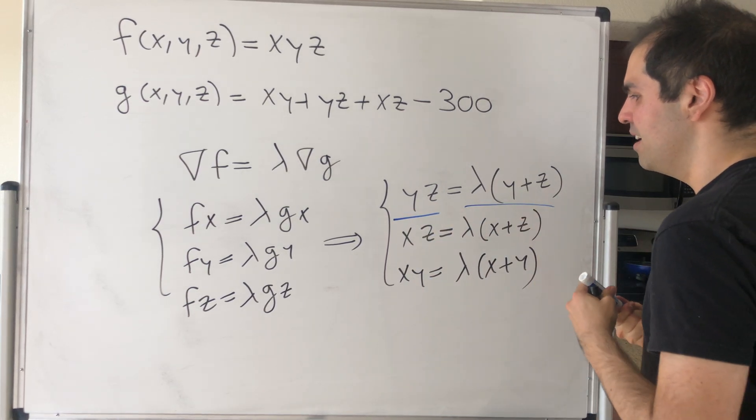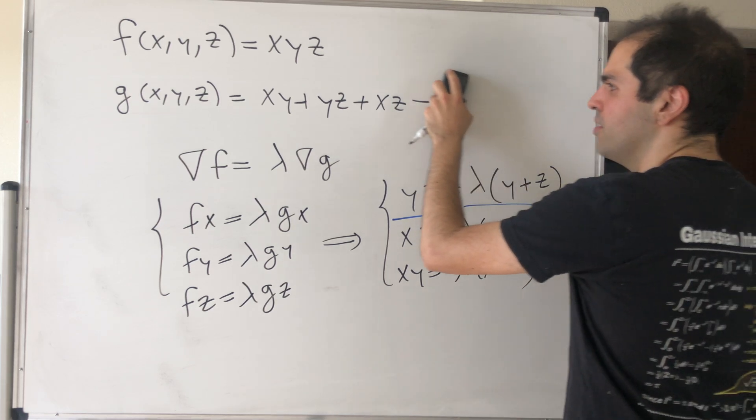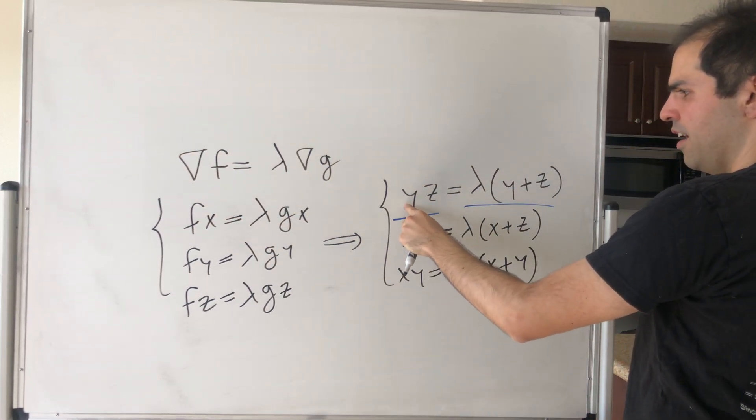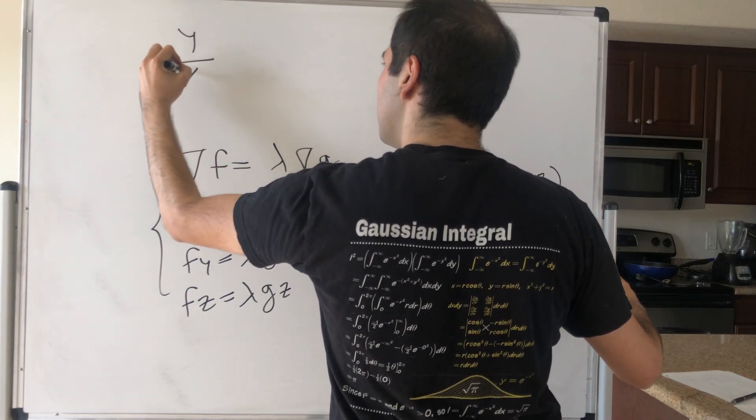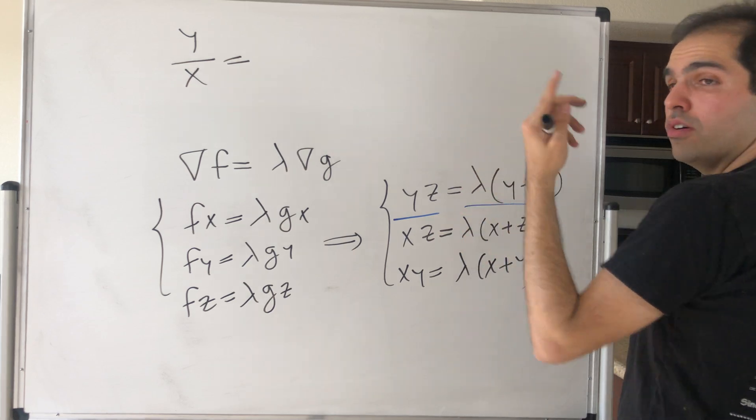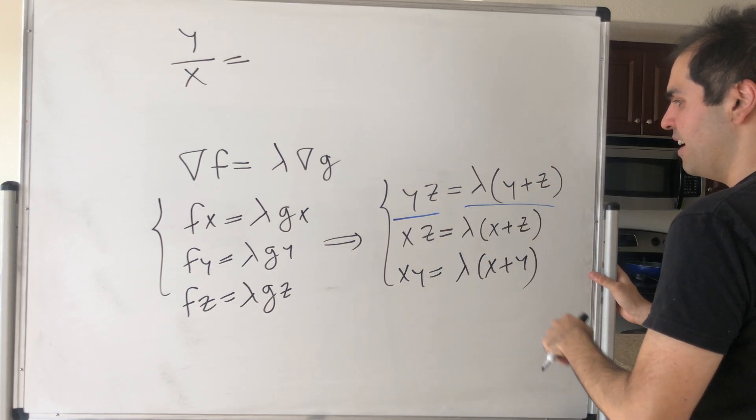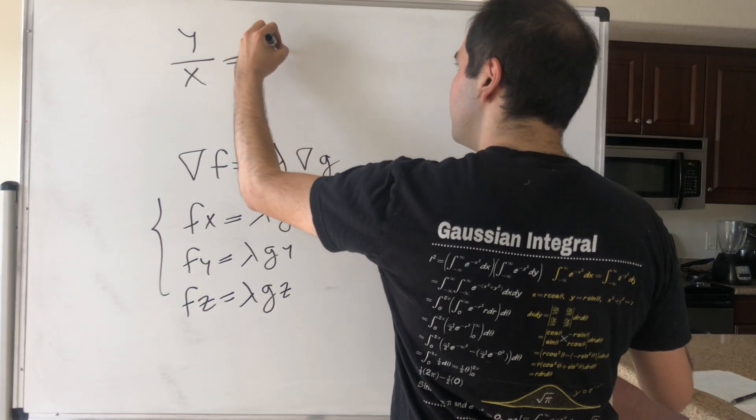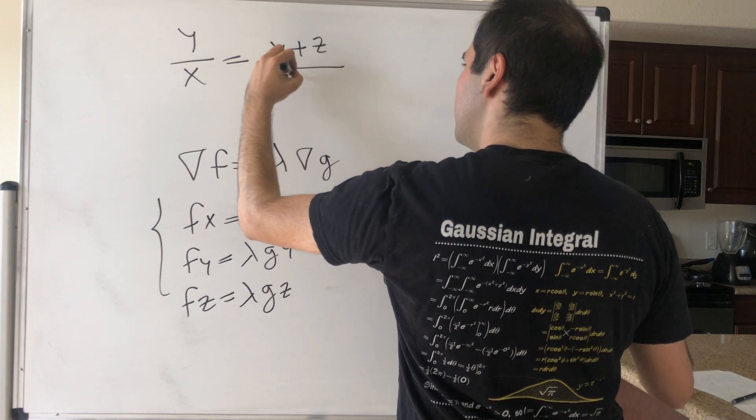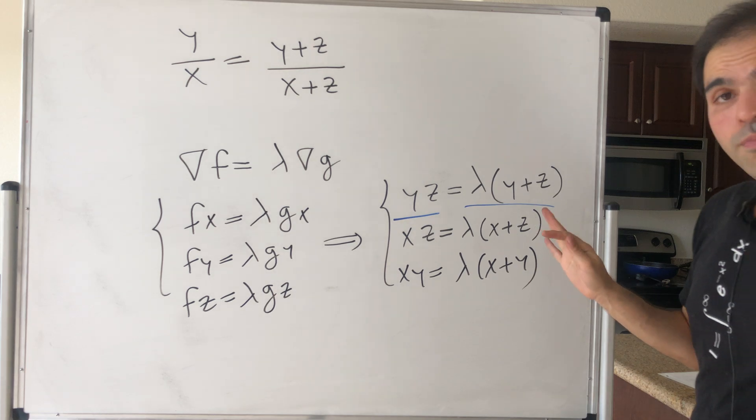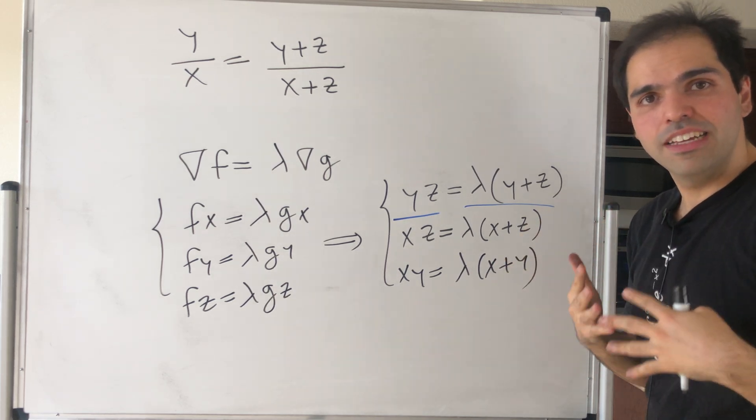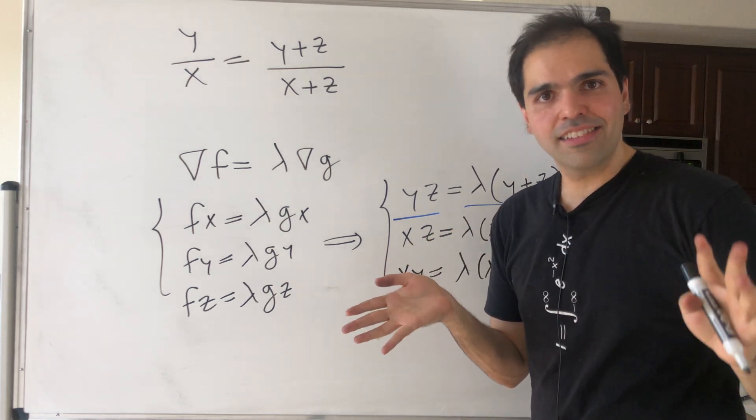Then we get yz over xz, so y over x equals lambda over lambda, so that cancels out, and then (y plus z) over (x plus z).